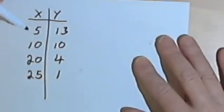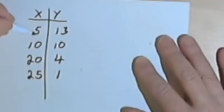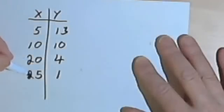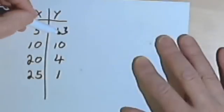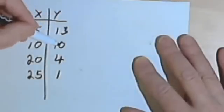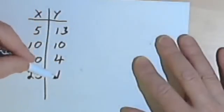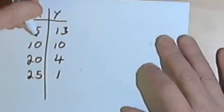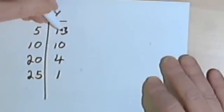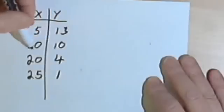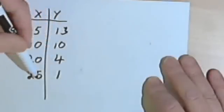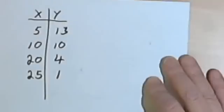I've got an x-column, or an input column. In the x-column I've got 5, 10, 20, and 25. And in the y-column, or the output column, I've got 13, 10, 4, and 1. We could look at these pairs of numbers — the 5 and 13, 10 and 10, 20 and 4, 25 and 1 — as ordered pairs.